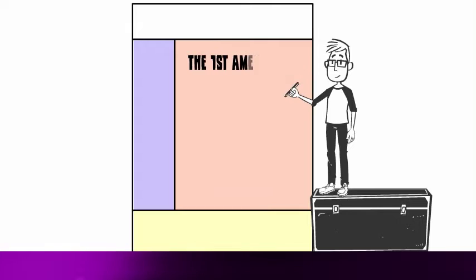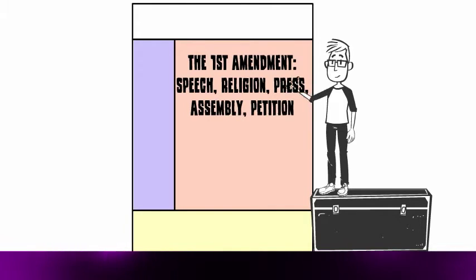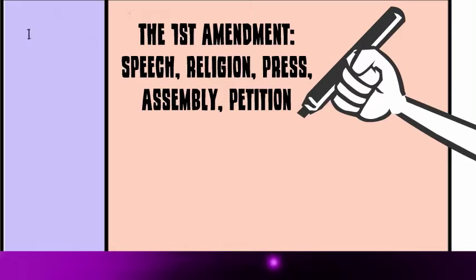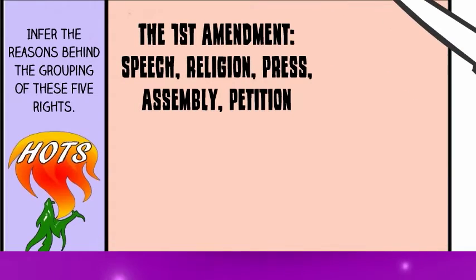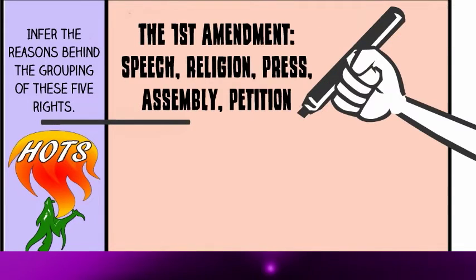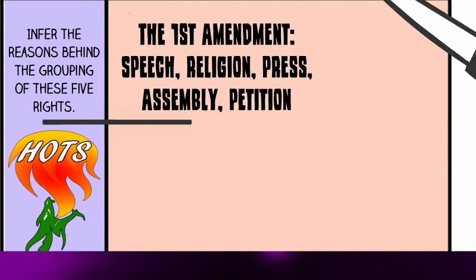For instance, if Cameron had scribbled down some facts on the First Amendment in the Quick Notes column on the right, he could then ask a corresponding complex question about the First Amendment in the HOTS column on the left, directly parallel to the basic info on the right.